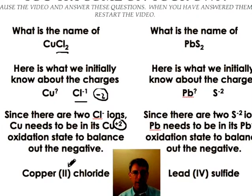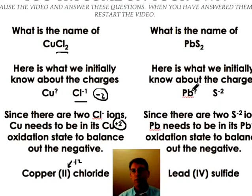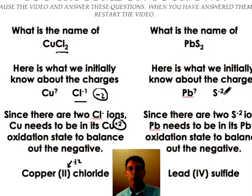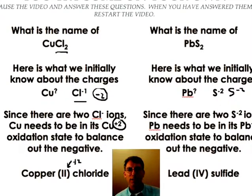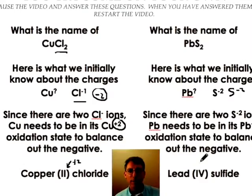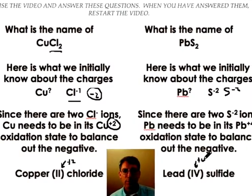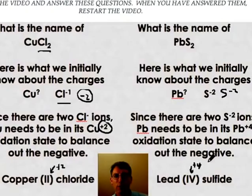So the two indicates that the copper is taking a plus two charge. And over here we initially don't know anything about the lead but we know that sulfur being in oxygen's family takes a negative two charge. Since we've got two of these two sulfur minus twos our lead is going to have to take a plus four charge. And in order to indicate that when we write the name we're going to write lead four sulfide. So with a positive four charge.